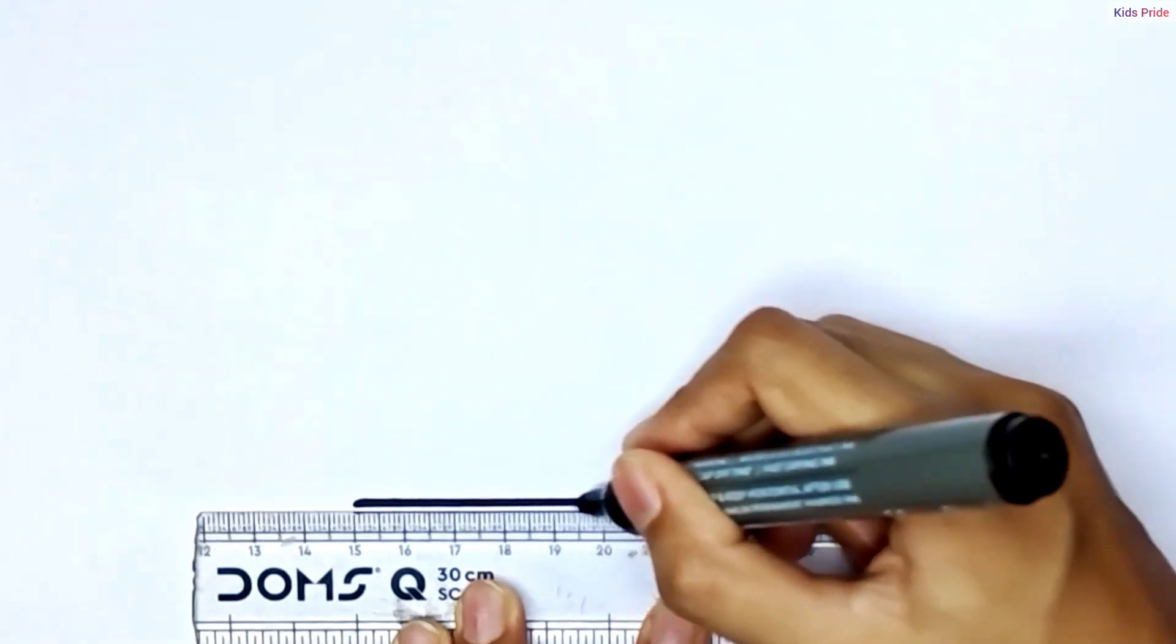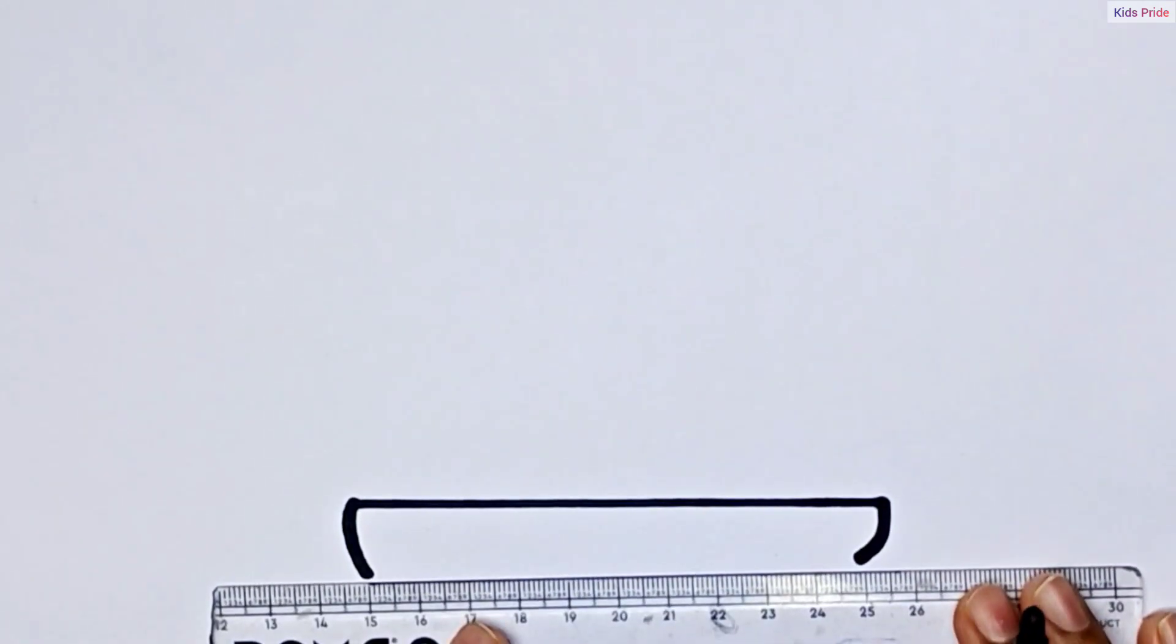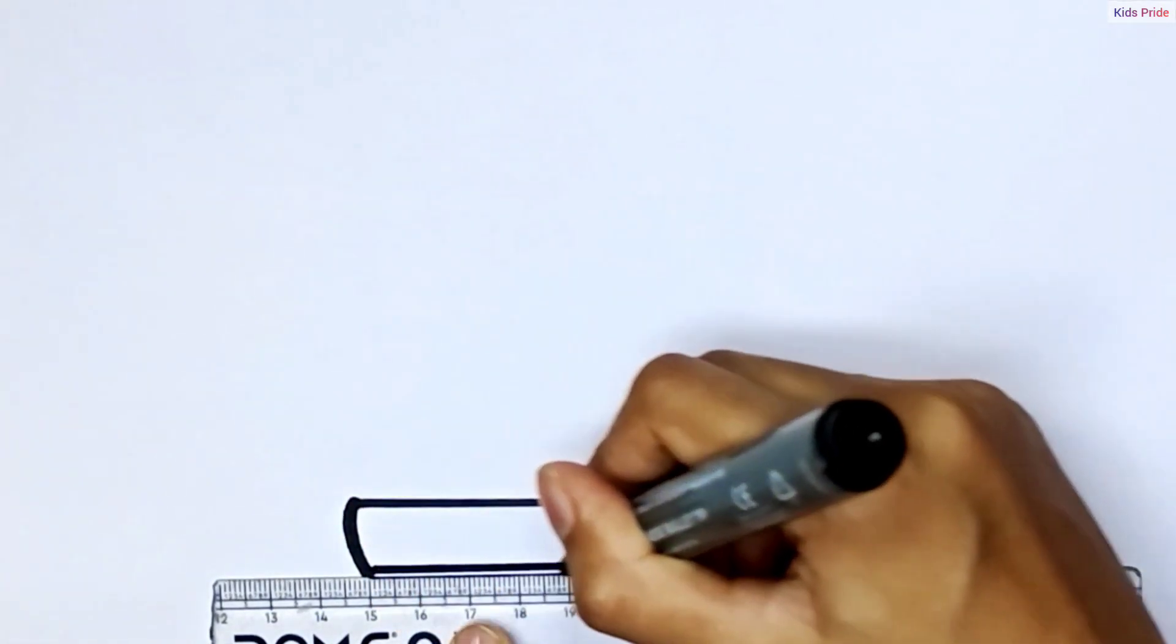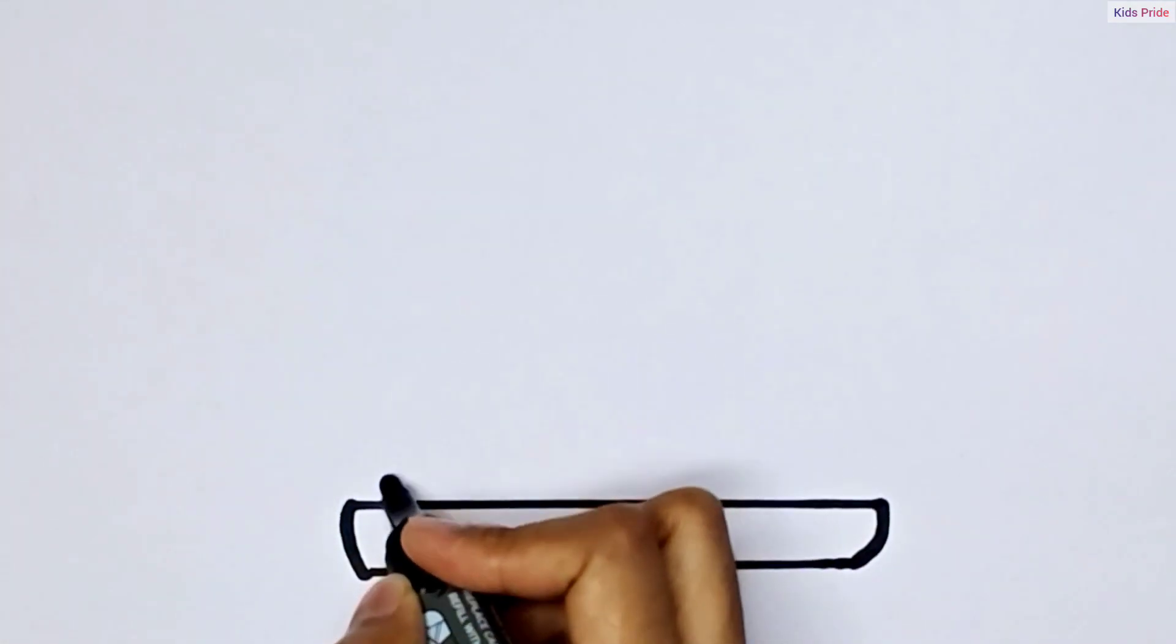Now use a scale to draw a straight line. Draw two curves like this and join them. Now after joining these lines we will draw first layer of the cake.